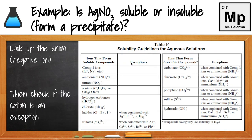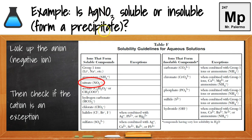Let's see an example. Is AgNO3 soluble or insoluble — does it form a precipitate? First, I look up the anion, the negative ion, written last in our chemical formula. That's NO3. I locate NO3 on Table F and see that it's in the soluble column, meaning it's going to dissolve. There's no exception listed, so all nitrates — anything with NO3 — are always going to be soluble, and therefore AgNO3 will form an aqueous solution.